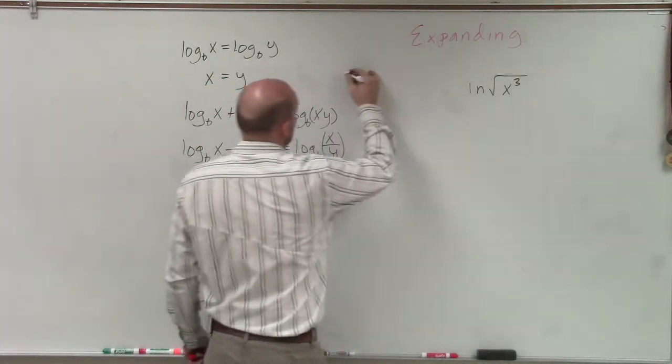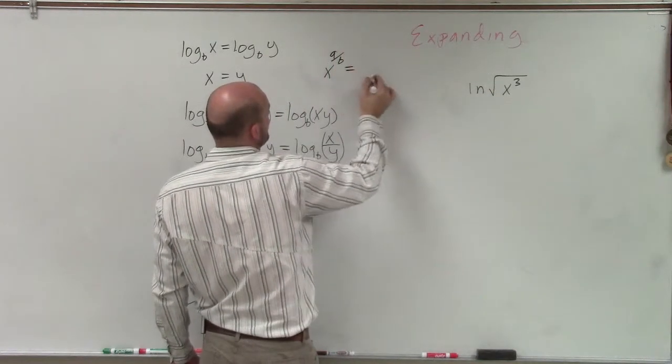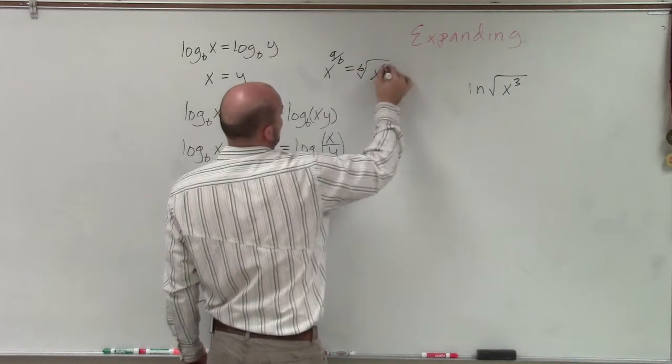Well, remember, when we have an exponent, especially the square root of an exponent, remember x to the a over b is equal to the b root of x to the a.